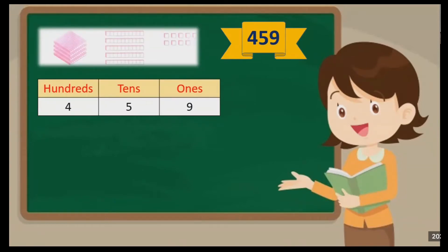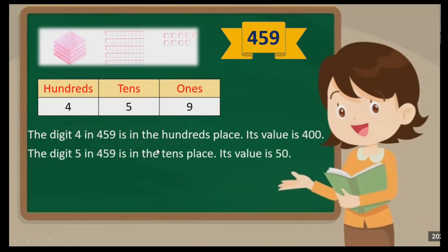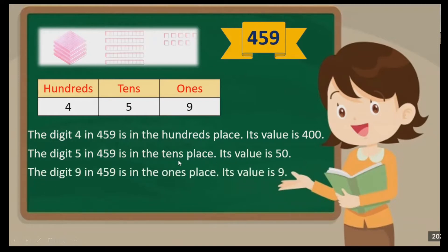Now we will identify the place value of each digit. The digit 9 is in the ones place. The digit 5 is in the tens place. The digit 4 is in the hundreds place. So the digit 4 in 459 is in the hundreds place and its value is 400. The digit 5 in 459 is in the tens place and its value is 50. The digit 9 in 459 is in the ones place and its value is 9.